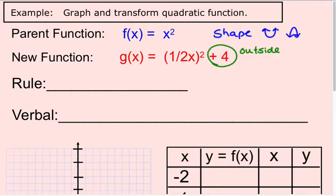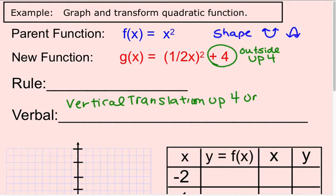It's adding, so what happens is it's going to be a vertical shift up k units. So if we come over here, we're going to move up 4 units. So let's identify our first verbal description. Vertical translation up 4 units.